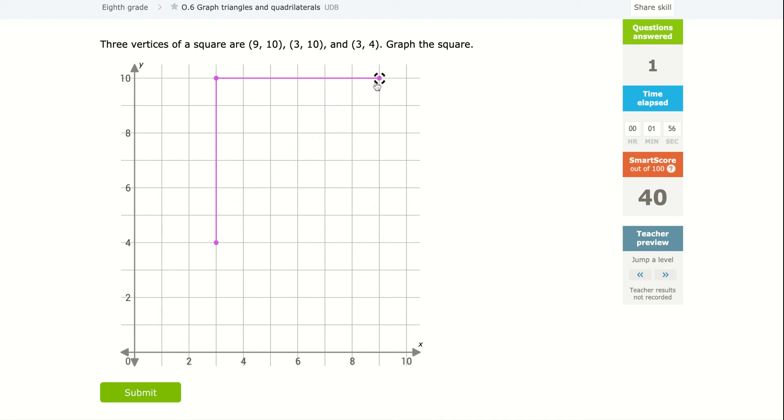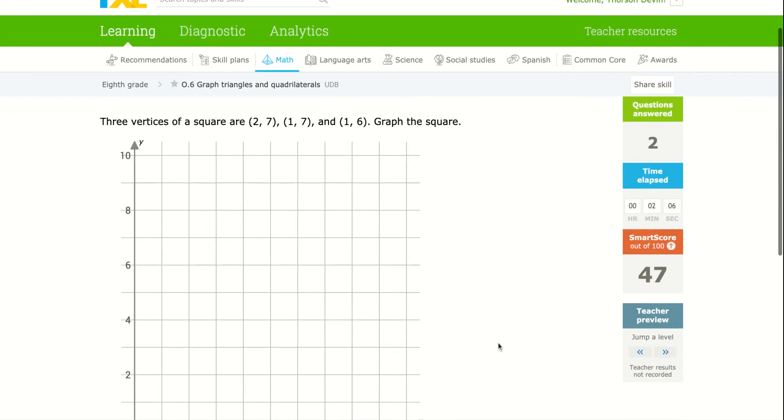We're not graphing a triangle. We're graphing a square. So where would the other vertice be? Well, it'd be right there to make it a square. So they only give you three of the four vertices, but it's still not very difficult.